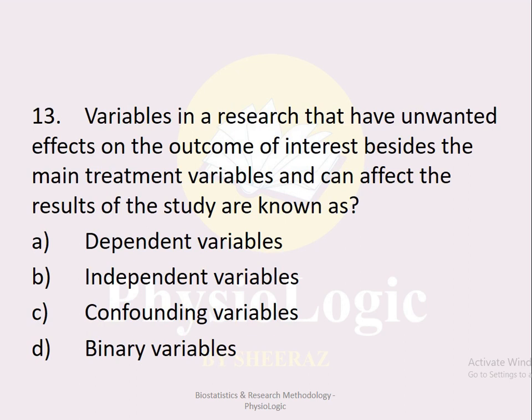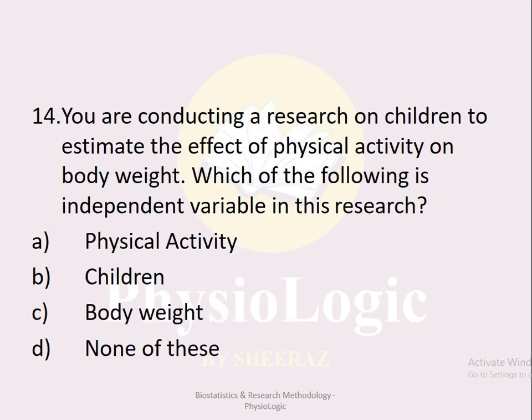MCQ number thirteen: Variables in research that have unwanted effects on the outcome of interest besides the main treatment variables and can affect the results of a study are known as: option a dependent variables, option b independent variables, option c confounding variables, option d binary variables. The correct option is option c, confounding variables. Confounding variables have undesired effects on main outcomes and sometimes cannot be controlled.